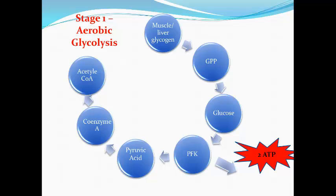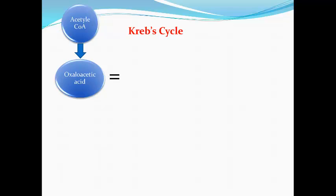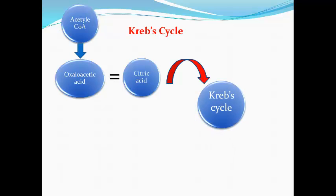So that's stage 1 — aerobic glycolysis. However, there's another stage, and stage 2 is called the Krebs cycle. The acetyl coenzyme A, which is the end product of stage 1, becomes the starting point for the Krebs cycle. It combines with an acid called oxaloacetic acid to form citric acid. This citric acid enters the Krebs cycle and undergoes four reactions in total.